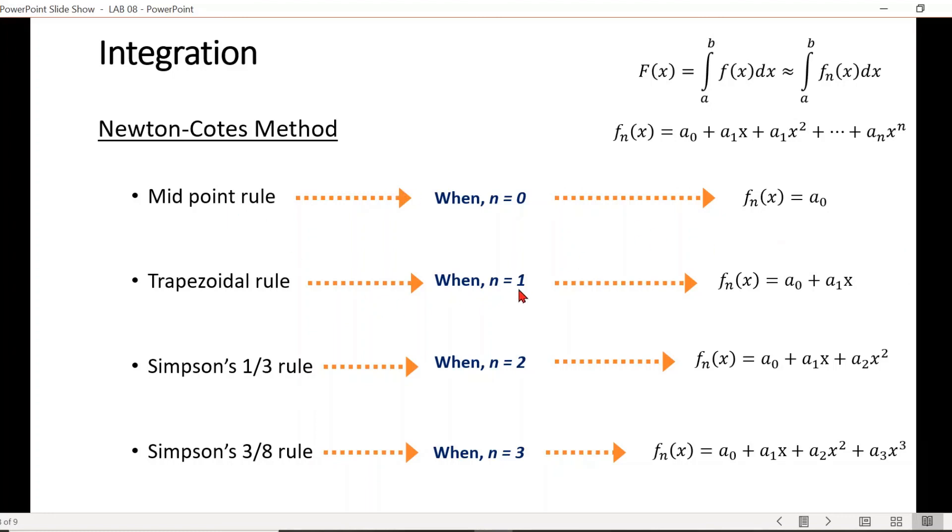When the power is one, we have trapezoidal rule with the first two terms from the polynomial equation. When n is two, we have Simpson's one-third rule, and for n equals to three, we get Simpson's three by eight rule.